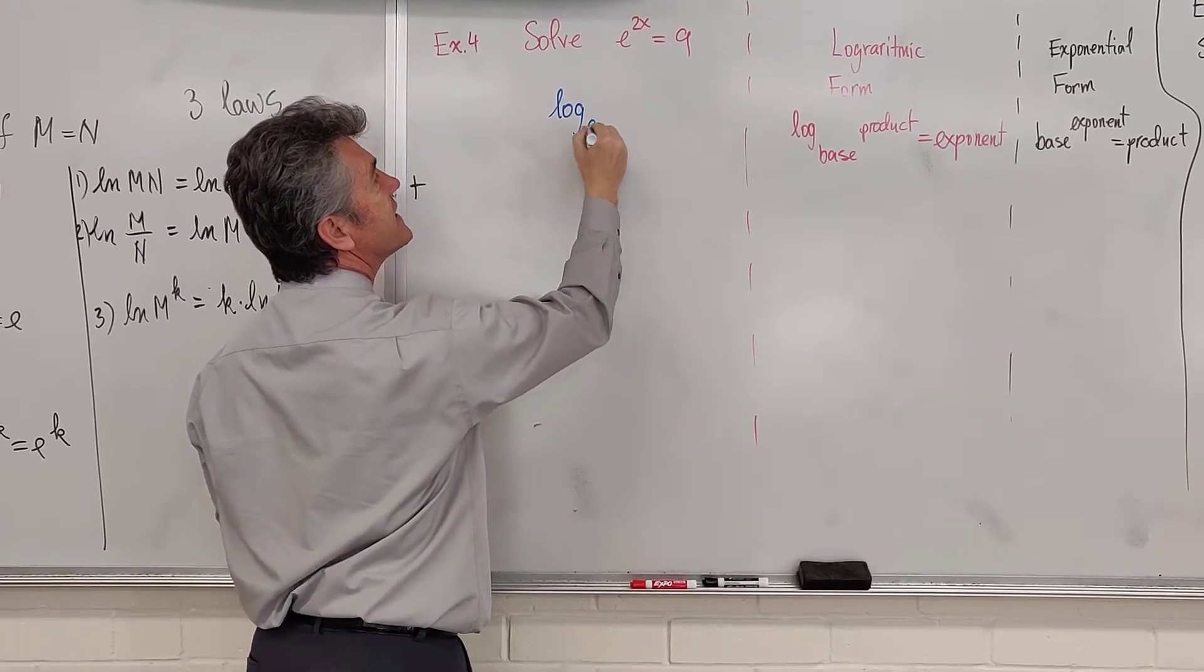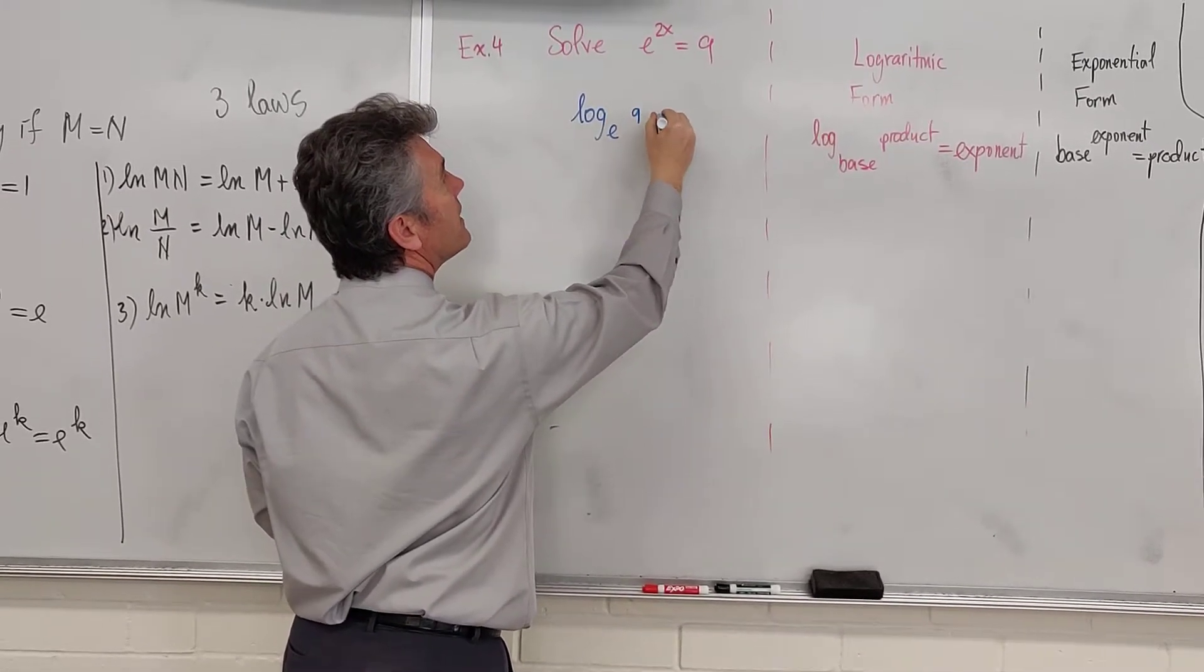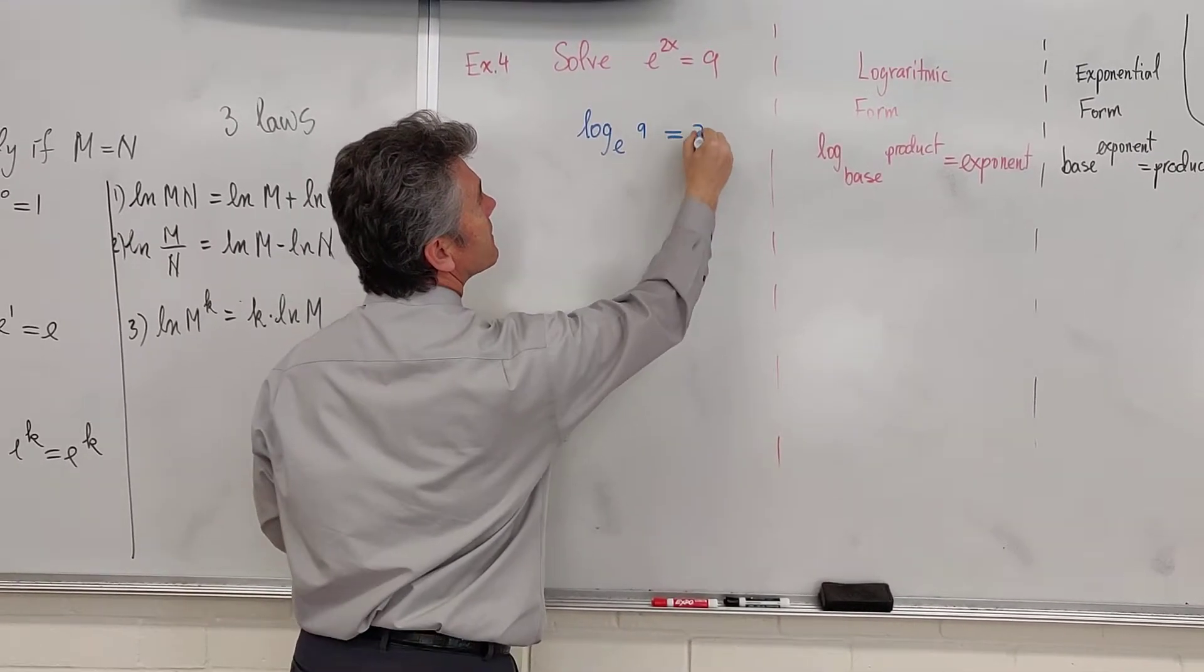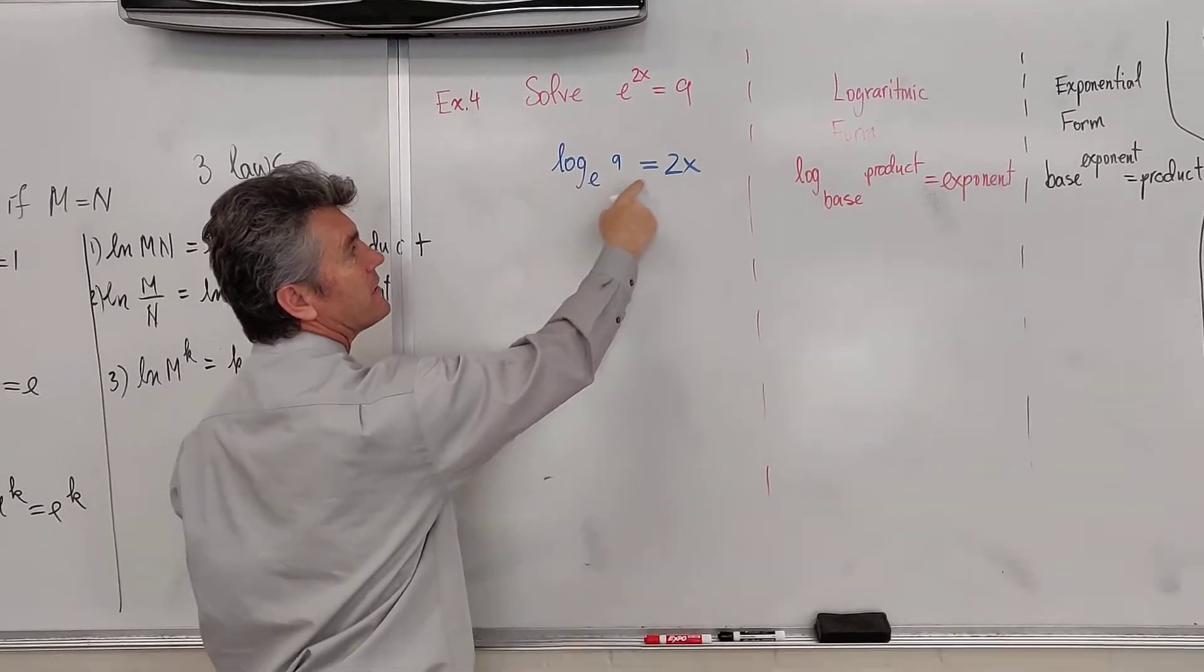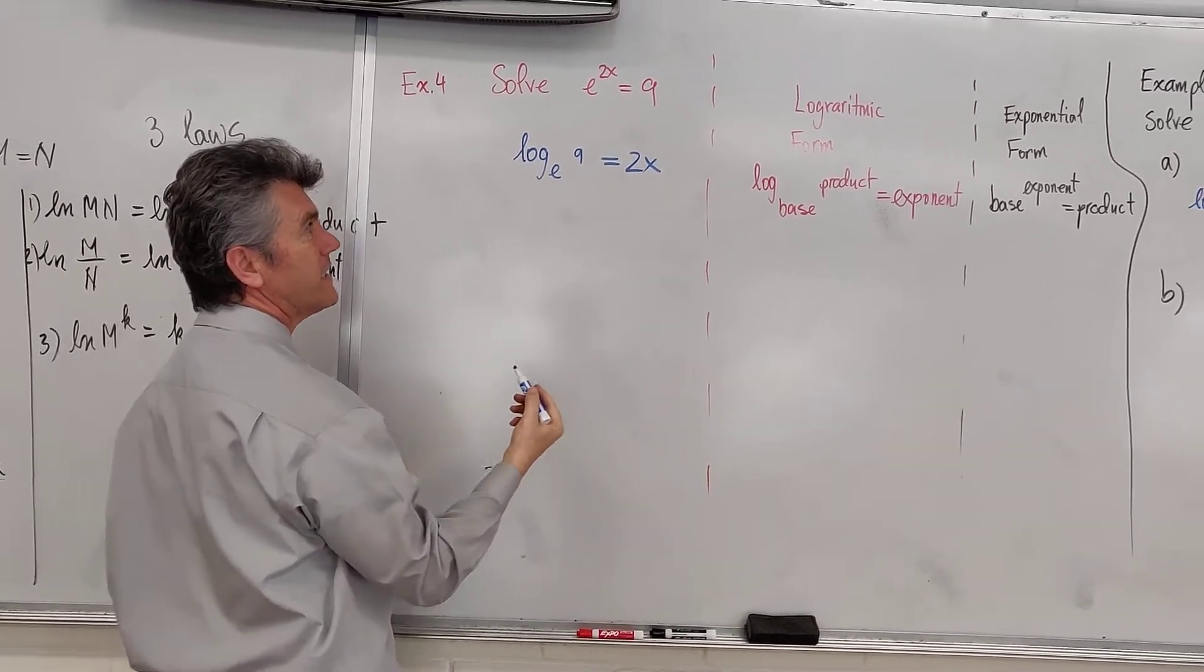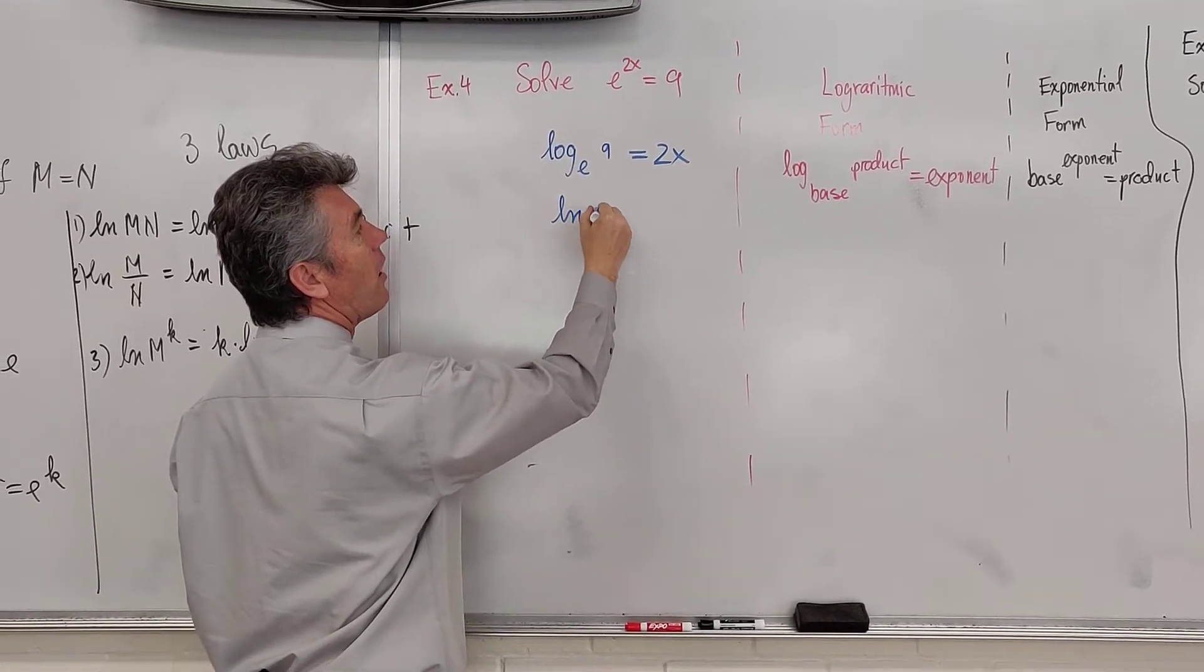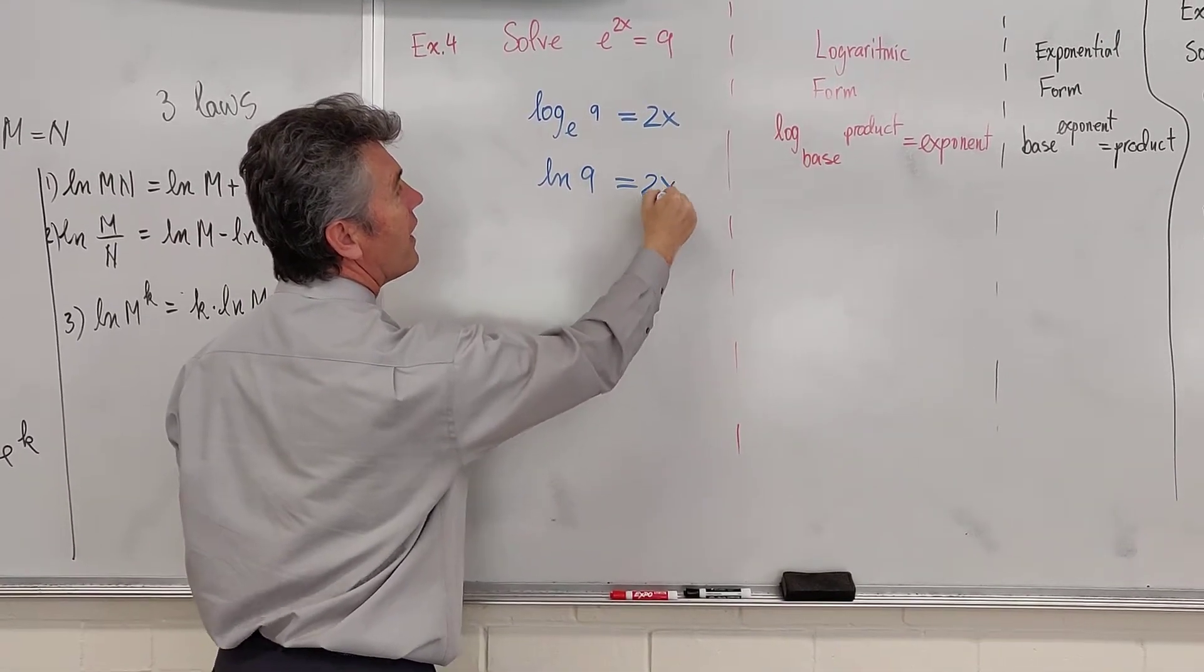The base is e. The product is 9. And the exponent is 2x. log of 9, the base of e is equal to 2x. But a log of the base of e is written as natural log. Natural log of 9 is equal to 2x.